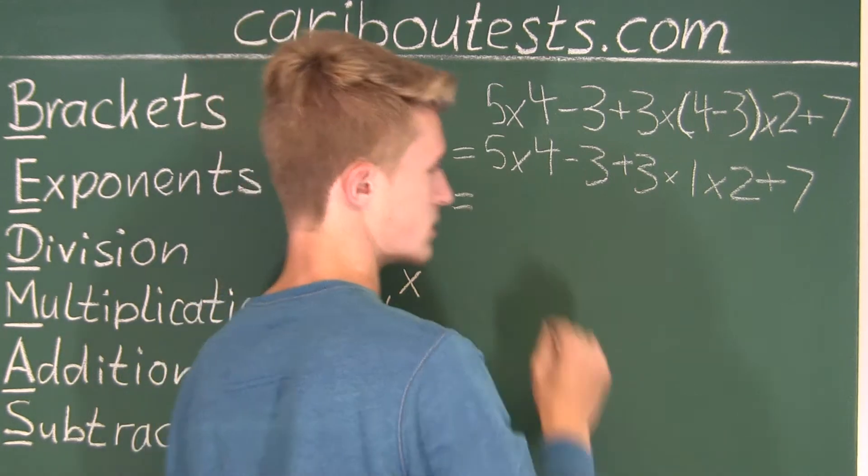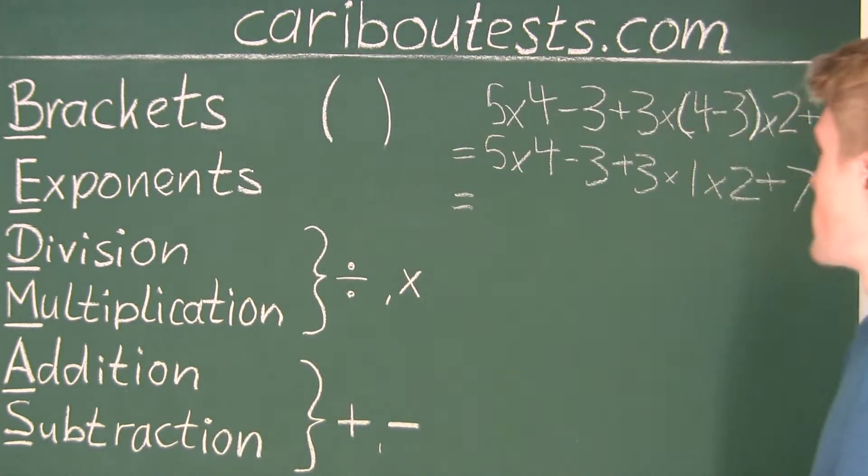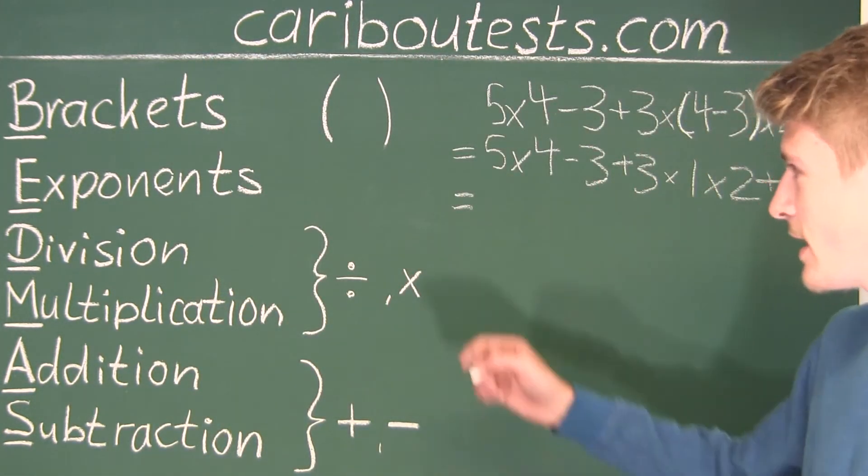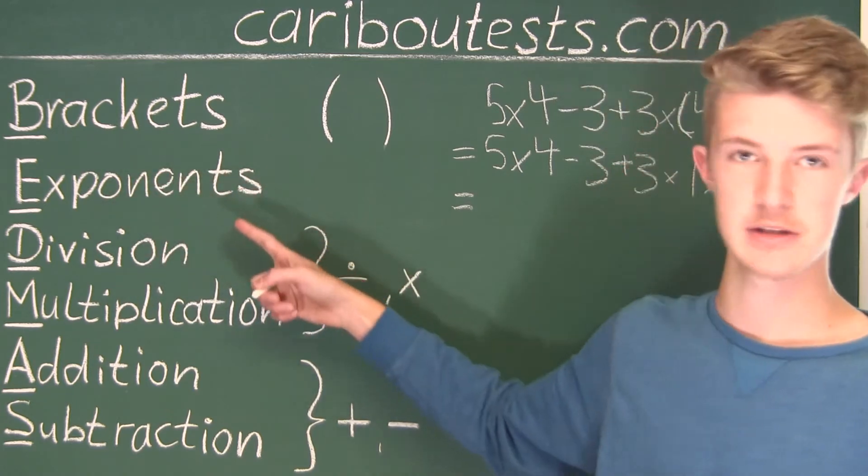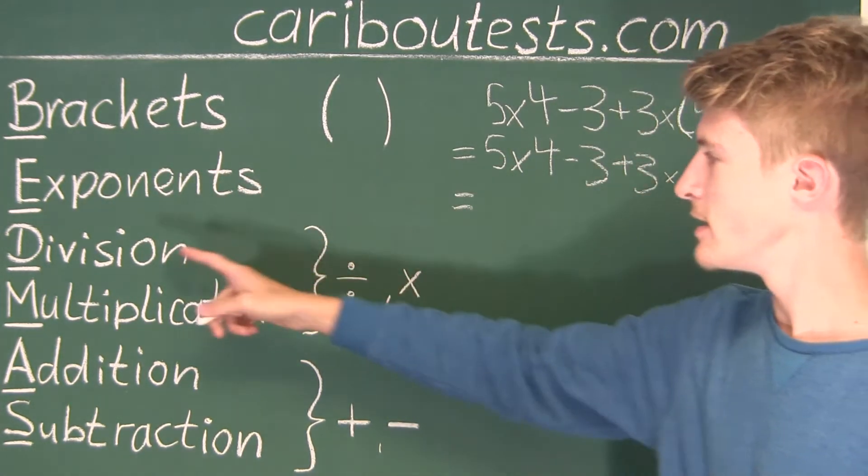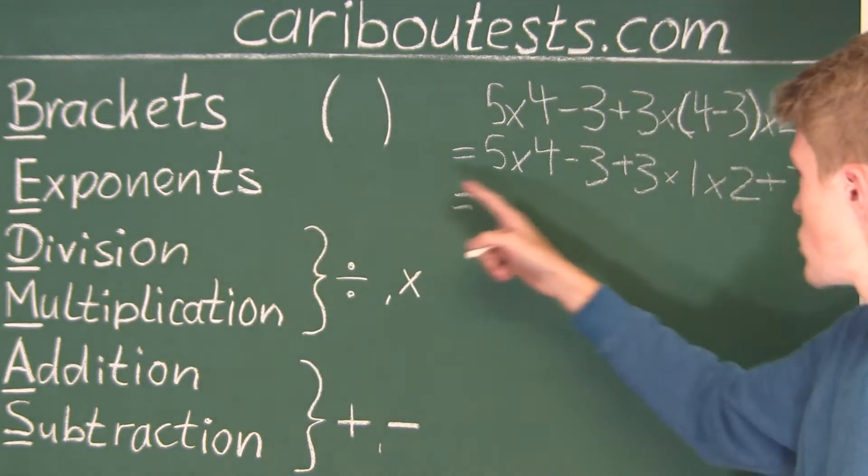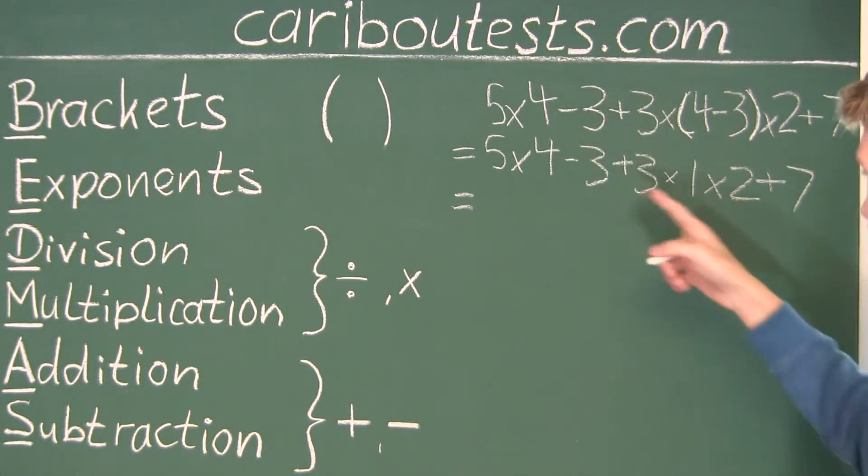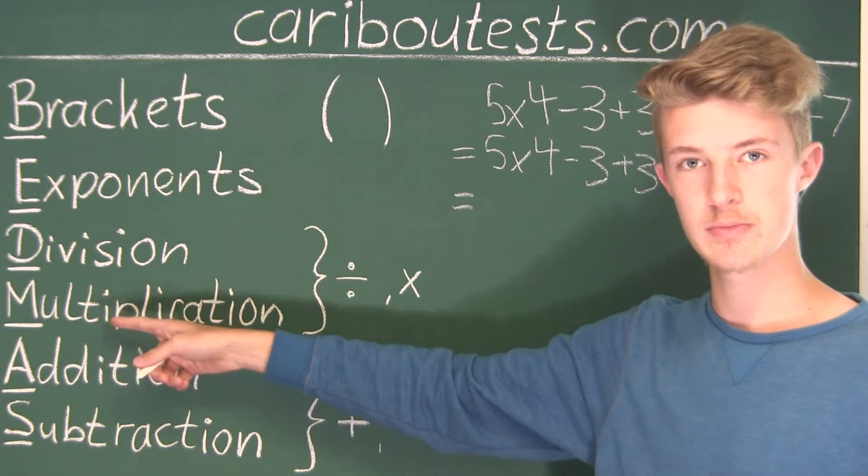Alright. So, next. So, next, we would check for exponents, but in this expression, we don't have any exponents. Then, we would check for division, and we don't see any division. Now, next, multiplication.